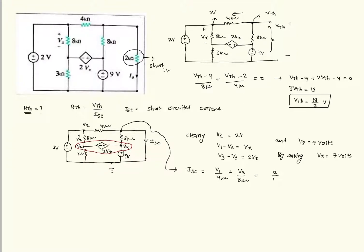So clearly V1 we know. V1 is 2 volts. 2 over 4. V3 is 9 volt. 9 over 8. So clearly it is 13 by 8 milli amperes.